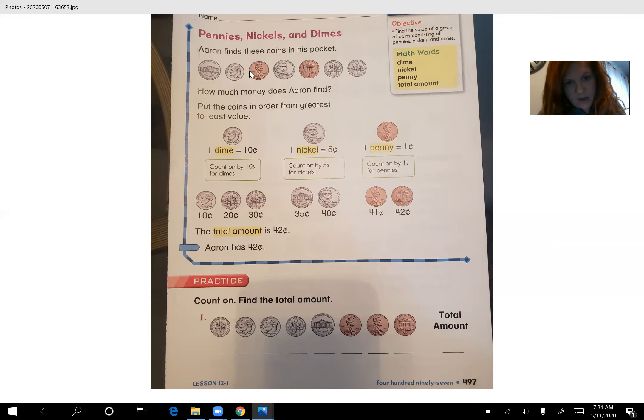So up here, Aaron has, we're going to start with dimes, three dimes, one, two, three, right? And dimes are 10 cents. 10, 20, 30. Next, he has how many nickels? Two nickels. Nickels are five cents. Okay, so he has 30, 35, 40. And then he has two pennies. Pennies are one cent. 41, 42. So Aaron has 42 cents.